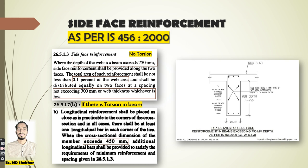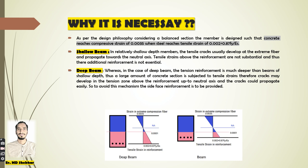In the next slide you will know the concept and importance of Side Face Reinforcement. According to the design philosophy of a balanced section, the member is designed such that the concrete reaches a compressive strain of 0.0035 when the steel reaches a strain of 0.002 plus 0.87 Fy by Es, the Young's modulus of elasticity of the rebar.